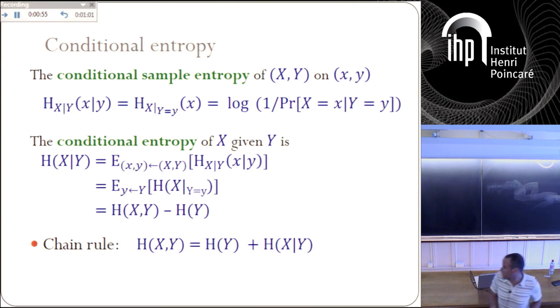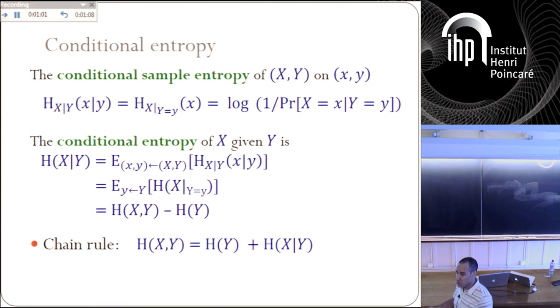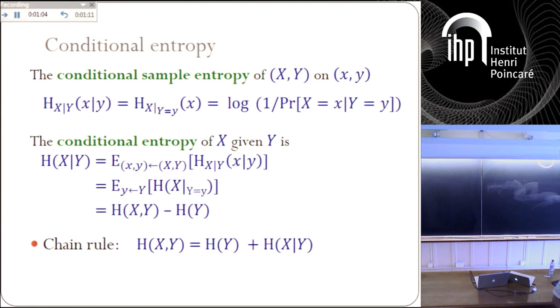It's not hard to see that this equals the entropy of X and Y minus the entropy of Y. Or, putting it differently, it leads to what's called the chain rule of entropy: the entropy of X and Y is simply the entropy of Y plus the entropy of X given Y.